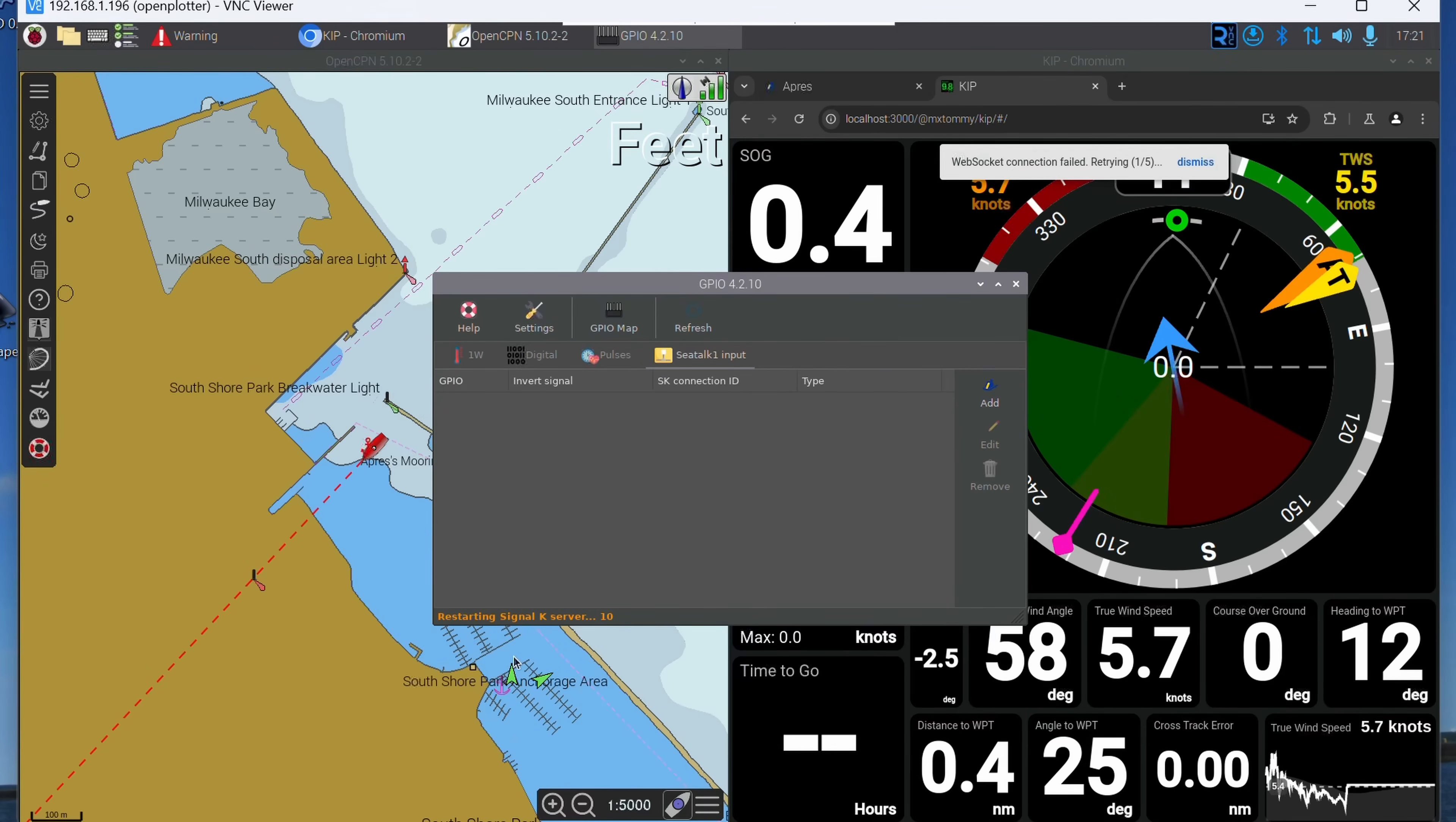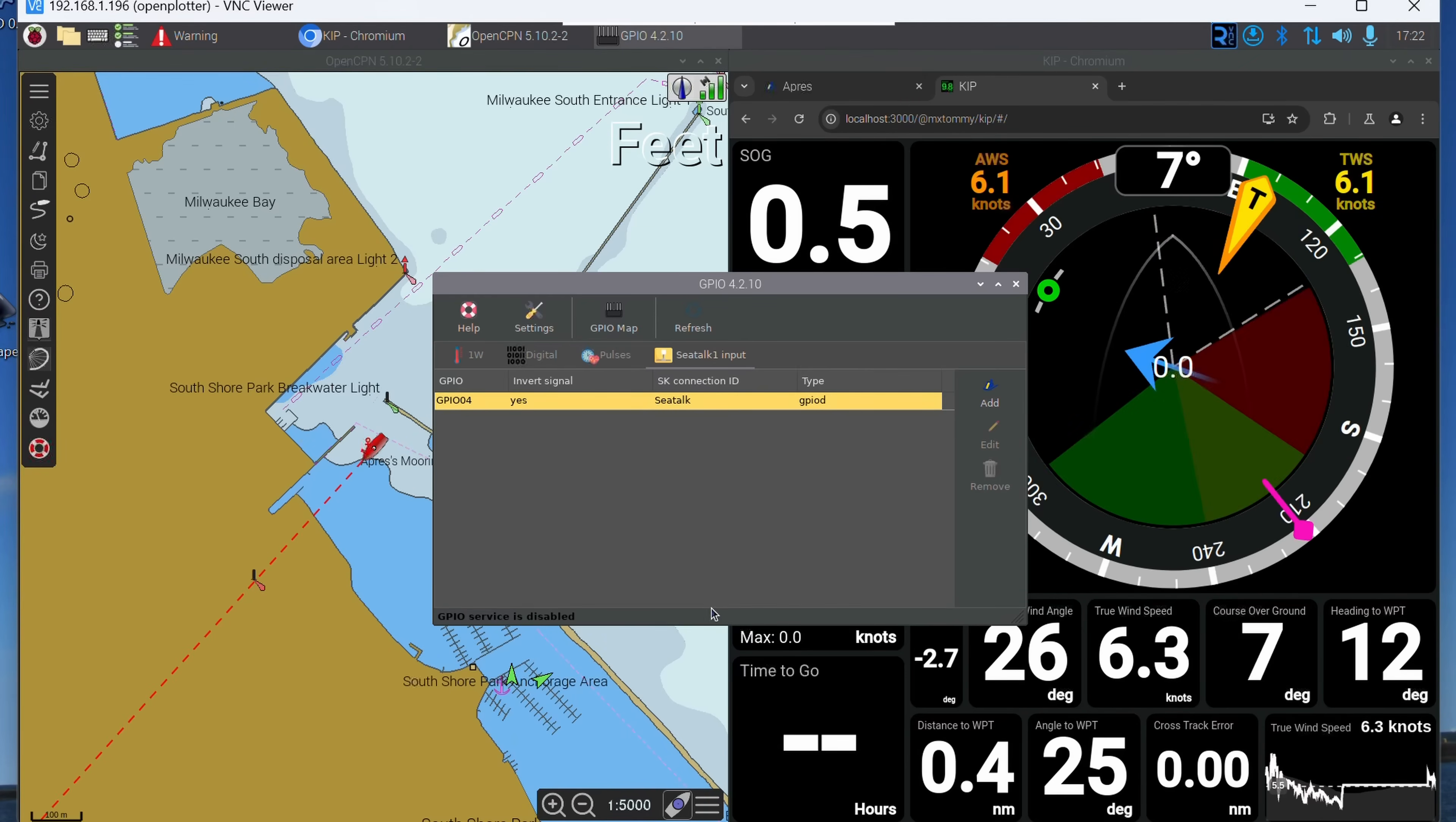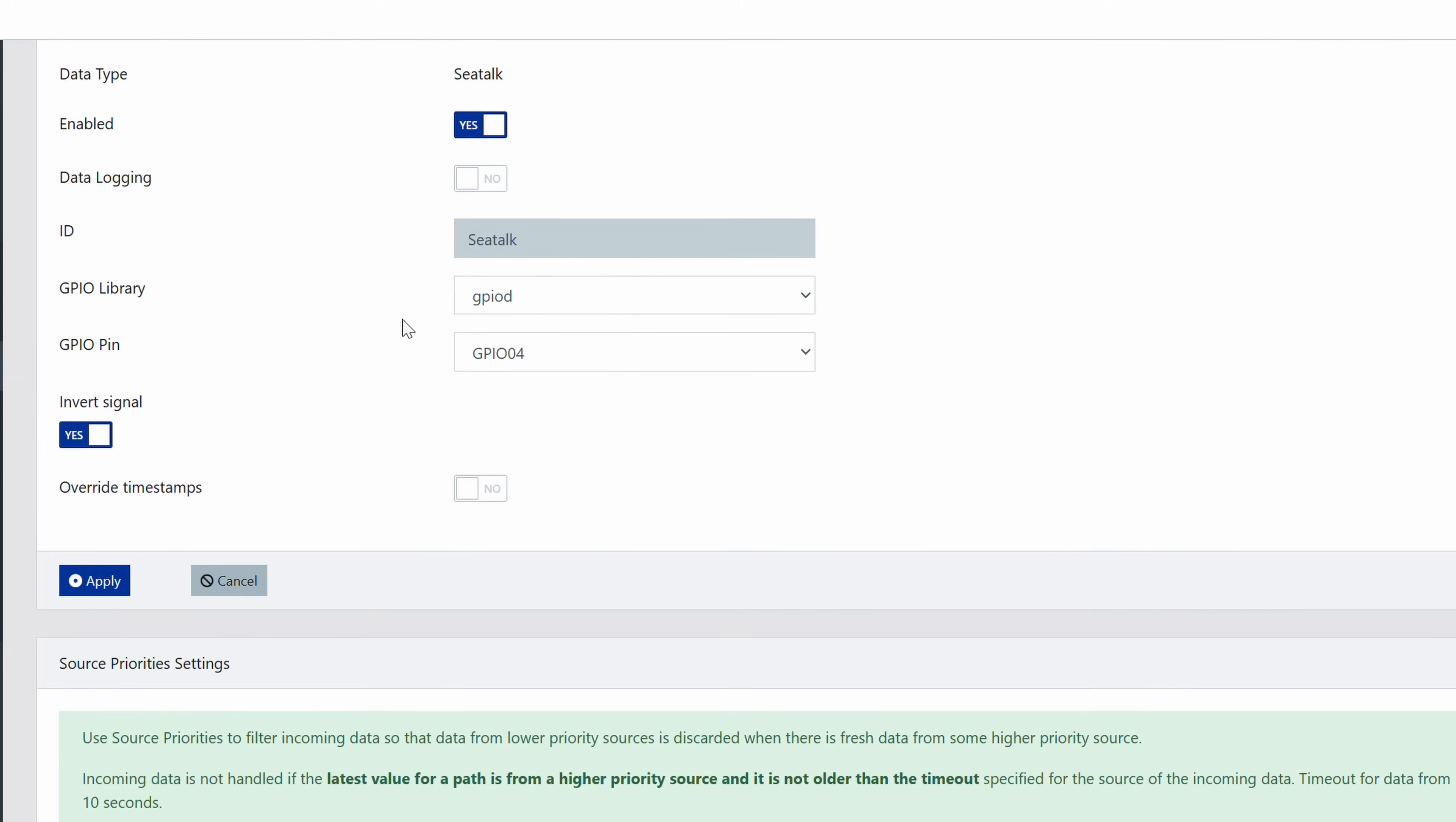The Signal K server should restart and now you see you've got this connection. Now we can go and look at this connection in Signal K itself. I'm just going to open a browser here and go to server data connections. You'll see SeaTalk here. Click on SeaTalk and you see data type SeaTalk enabled yes, ID CTARC, GPIO D, GPIO 4, and invert signal.